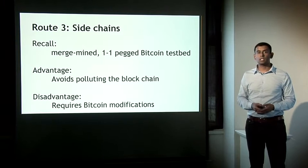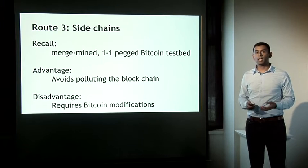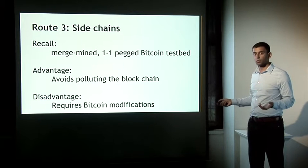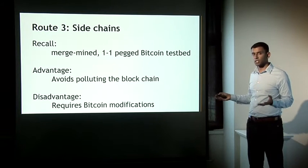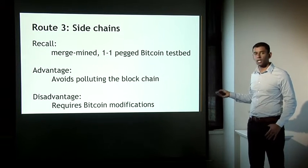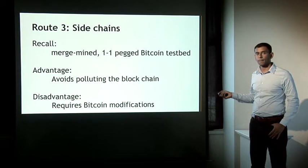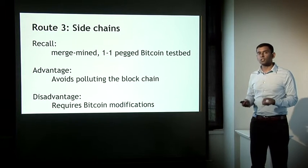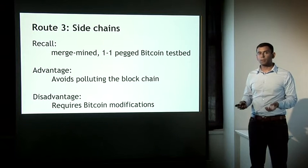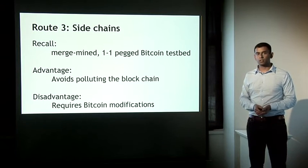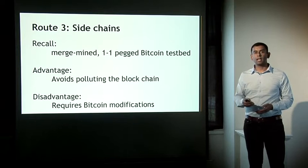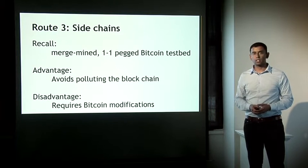Perhaps we can use sidechains with enhanced scripting properties to achieve complex contracts and other things one wants to decentralize. Compared to embedding, the advantage is that you're not polluting the blockchain. But the downside is that Bitcoin modifications are necessary to even support the notion of a sidechain — so who knows if this will happen, but if it does, it could provide another interesting alternate route.